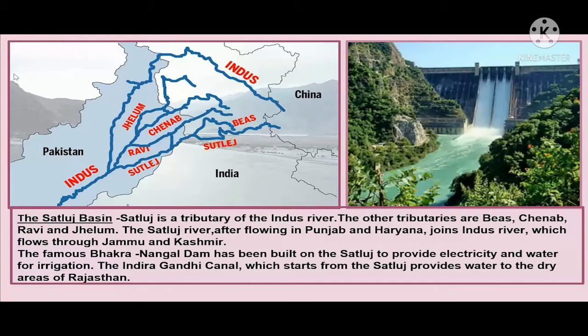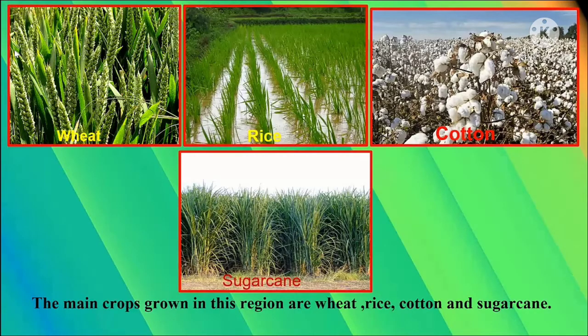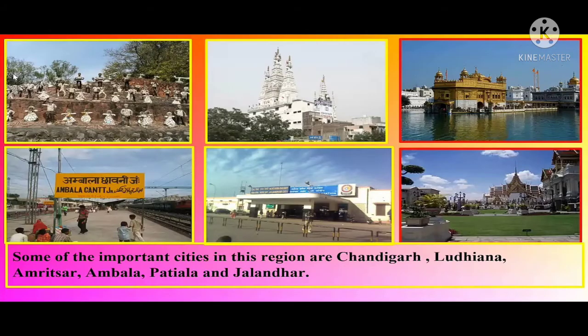The famous Bhakra Nangal dam has been built on the Satludj to provide electricity and water for irrigation. The Indira Gandhi canal, which starts from the Satludj, provides water to the dry areas of Rajasthan. The main crops grown in the Satludj basin are wheat, rice, cotton and sugarcane. Some of the important cities in this region are Chandigarh, Ludhiana, Amritsar, Ambala, Patiala and Jalandhar.